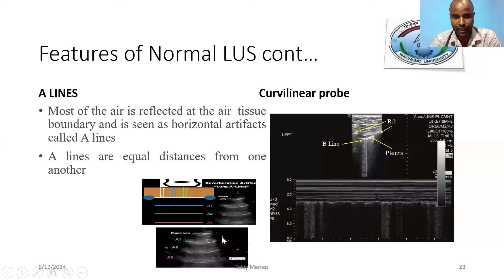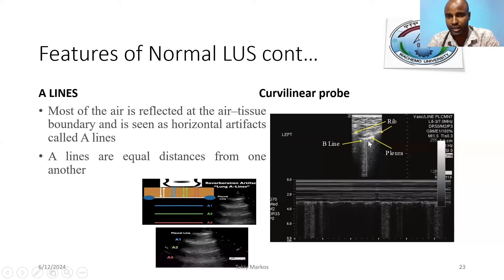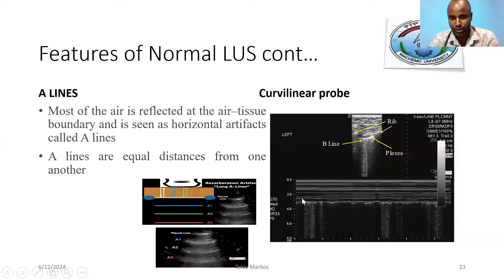The first line is the pleural line, then after we look for horizontal lines which are equidistant — called A-lines. Here a curvilinear probe is used; rib shadows are here. Only two B-lines are present, which is normal. A bright line is the pleural line, and below this is our seashore sign. When the lung is filled with pneumothorax, this line becomes the barcode sign.